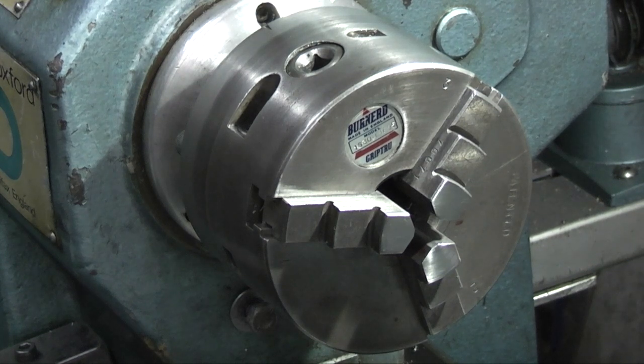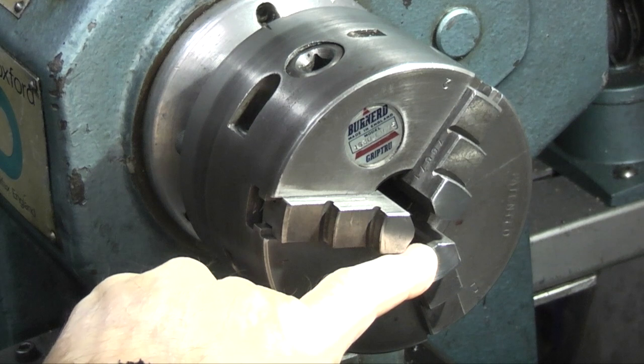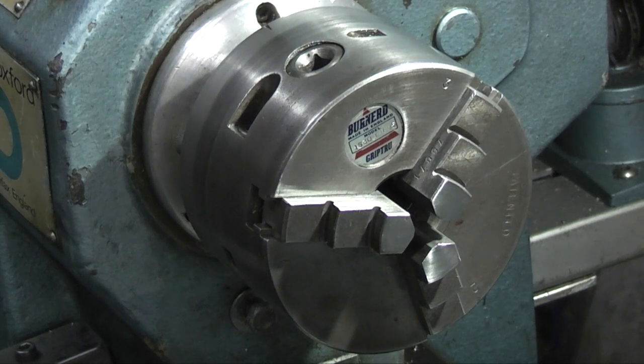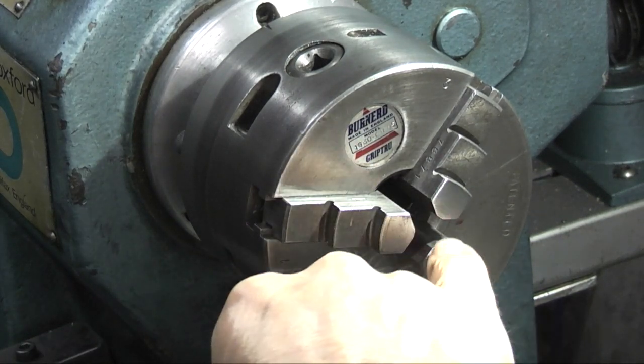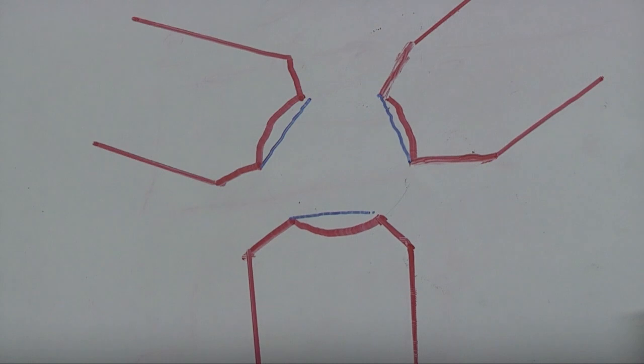This three jaw chuck I have fitted in the lathe is a Bernard Grip True and originally each jaw had a flat surface. Obviously as I've refurbished it and ground the jaws it now has a diameter on the surface instead of the flat. So now the jaws look like this. The blue is where the original jaw would have been with a flat face and the red is as the jaw is now with a curved face.